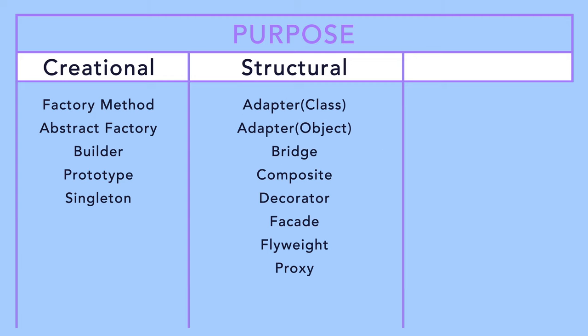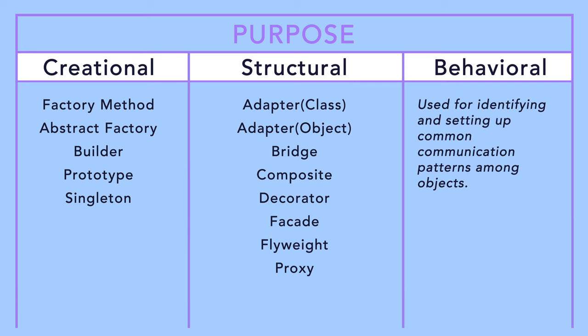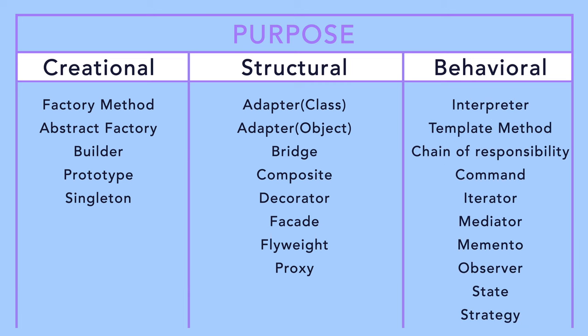The final criteria is behavior. Once we are done instantiating objects and classes and once we are done structuring them in relation to each other, the last part that any object-oriented code solves is how those objects and classes communicate with each other. They pass messages to each other in order to fulfill a complex business use case, such as saving data or fetching data. That behavior is solved using the patterns we categorize as behavioral patterns, which you can see here.